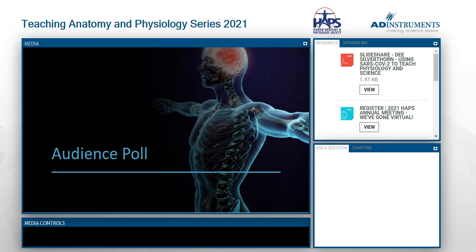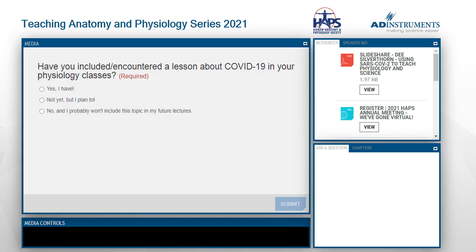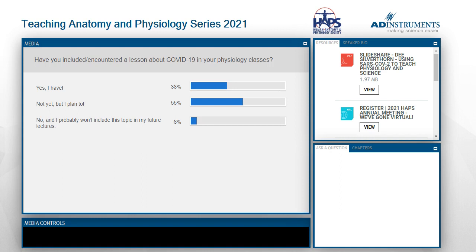Before we get started with Dee, I wanted to run a couple of audience polls. The first question is: have you included or encountered a lesson about COVID-19 in your physiology classes? Options are yes; no, but you plan to teach it; and no, you probably won't include it in future lectures. This was a question Dee was particularly interested in learning about her audience. The results show that many plan to teach more about COVID-19 in the future, which is really exciting.